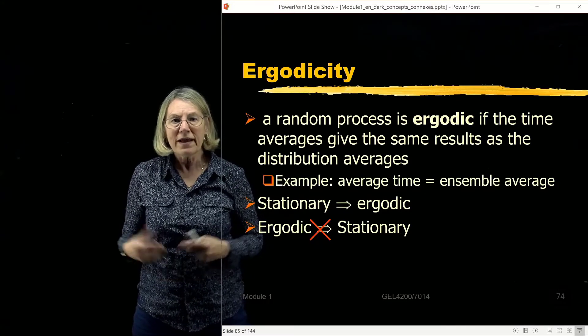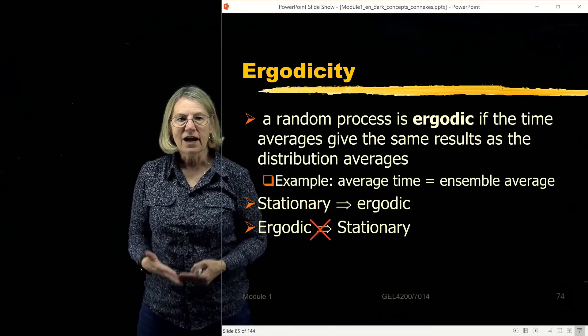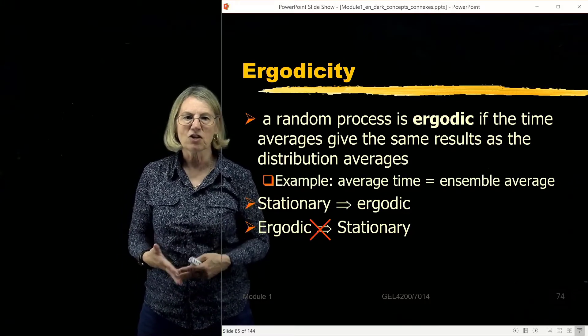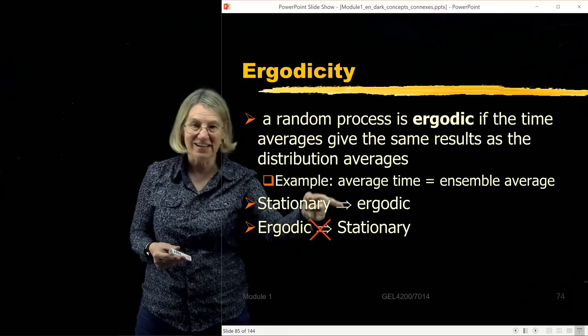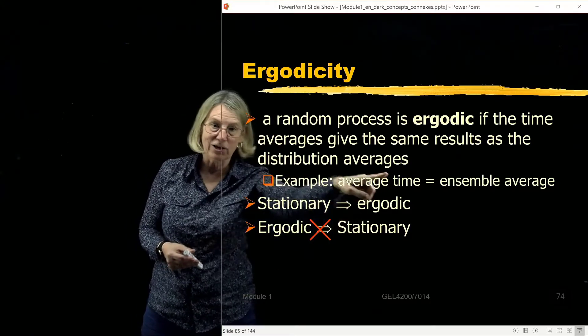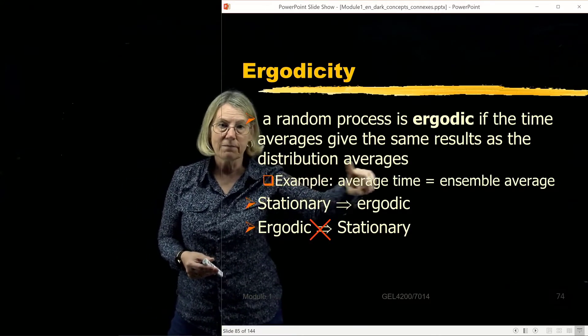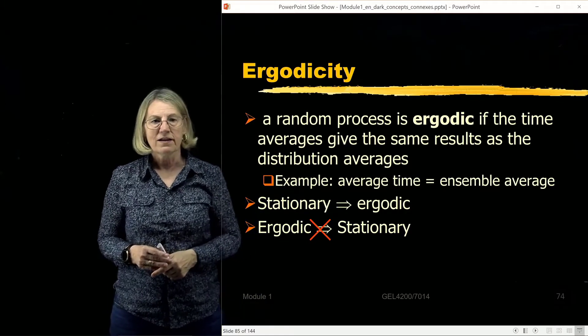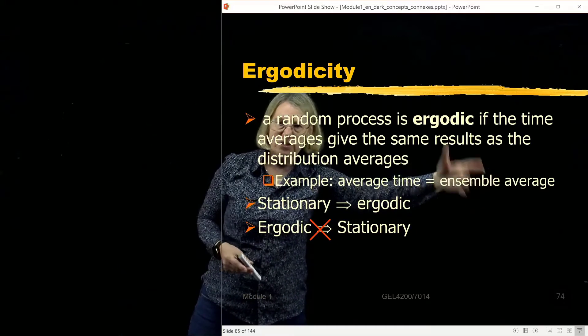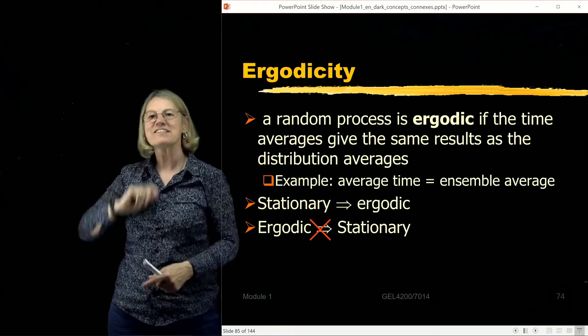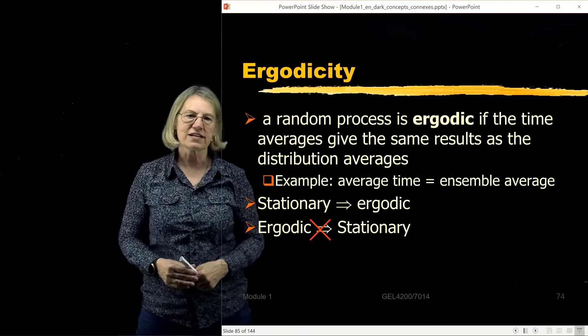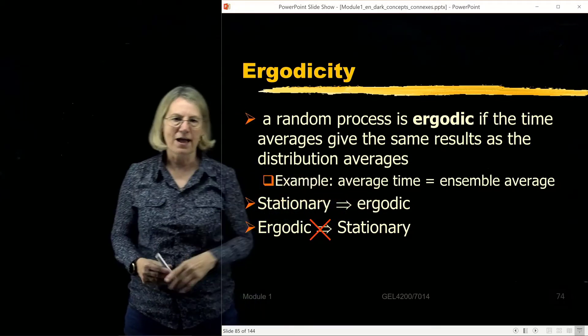So a random process is said to be ergodic if the time averages give the same result as the distribution averages. Distribution averages, stochastic averages, mean, expected value - all those could be replaced there. Even ensemble averages is another. So distribution average, ensemble average, stochastic average, expectation - all those things. And now we're comparing them to a time average.